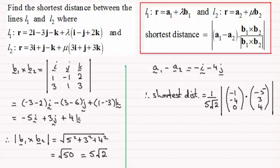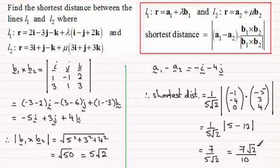And if we dot those two vectors together we get 5 minus 12. We've got the magnitude of that, which is going to be just 7. So we end up with 7 over 5 root 2, or if we rationalize it, 7 root 2 over 10.